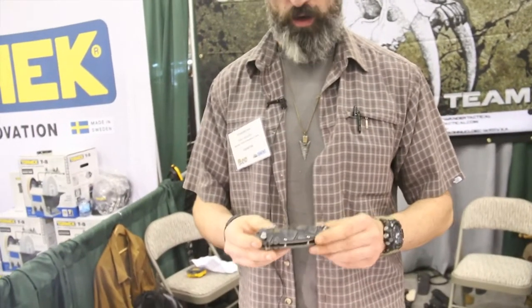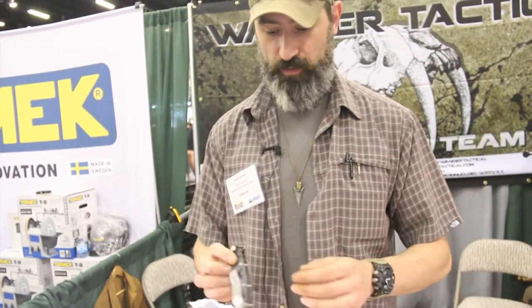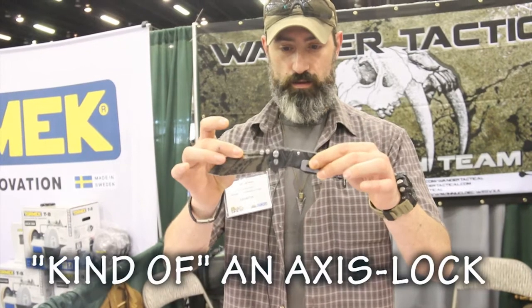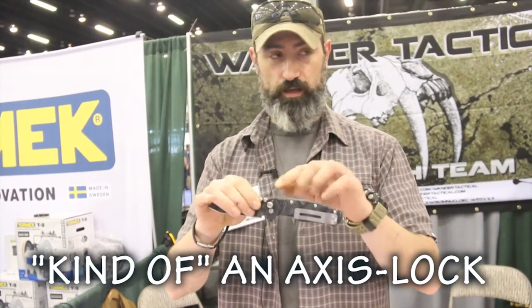We are here at the Blade Show 2018. We are so happy to be here and this is the product we brought here this year. This is our new folder which is made with two titanium liners and it's a kind of axis lock that works vertically. What we wanted to do is taking out all the weakest parts that you can find in an unusual axis lock and we shape two independent rocker arms into each liner that works independently moving this part and the locking mechanism itself.